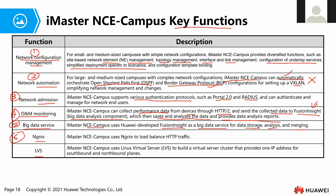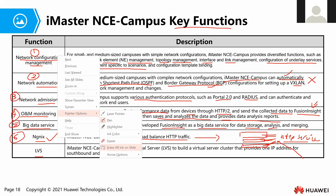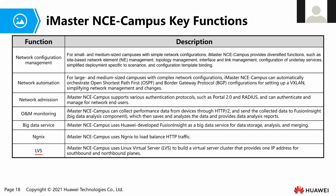The sixth feature is Nginx. Nginx is basically used for load balancing between HTTP traffic. For example, in NCE Campus we may have a scenario with three nodes — three servers — and these three nodes have HTTP services. Nginx will help to balance these HTTP services. If someone wants to access the HTTP service, it will automatically load balance between these three servers.